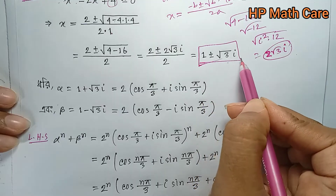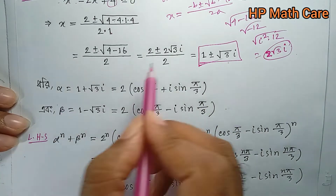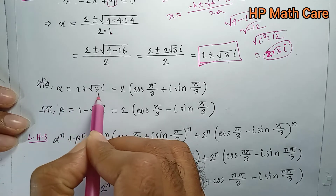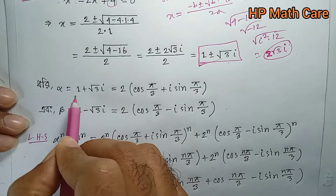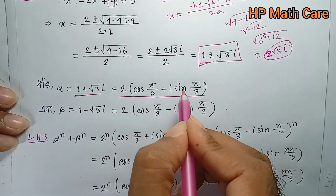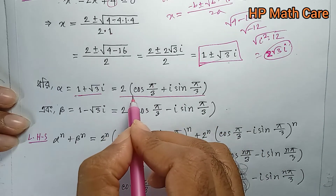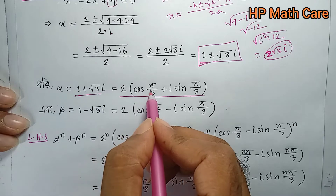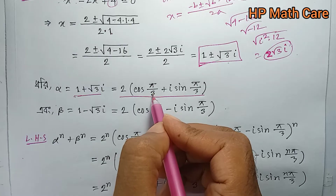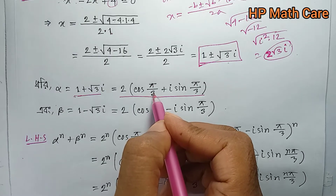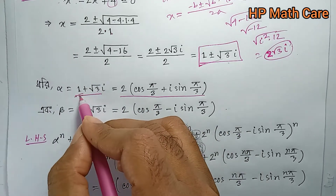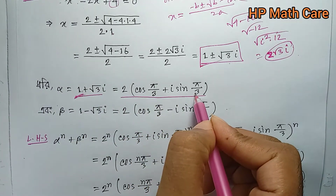Alpha is equal to one plus root three i, and one minus root three i. So cos(π/3) means cos 60 degrees, which equals one half. Therefore, cos(π/3) = 1/2.